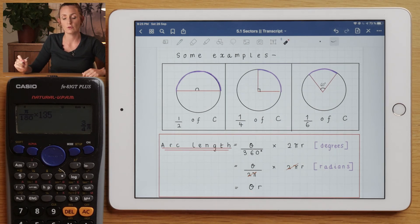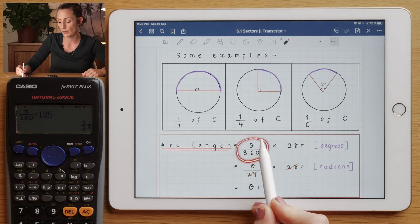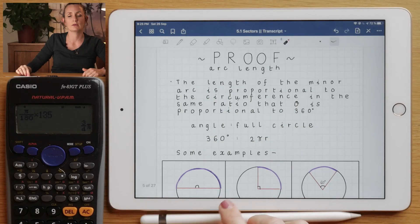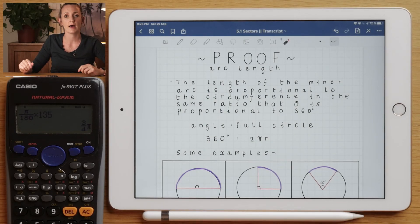So the arc length formula calculates what fraction of the full circle you have, and then you multiply it by the circumference of the full circle. In the next key skill, we're going to be looking at some practical examples about how we can apply this formula to exam style questions.